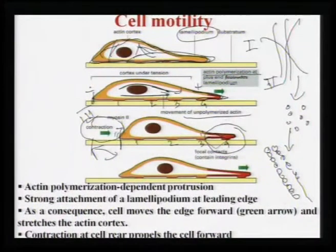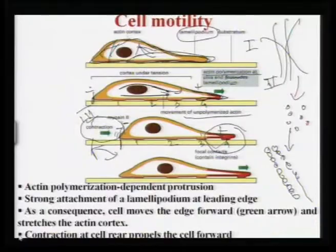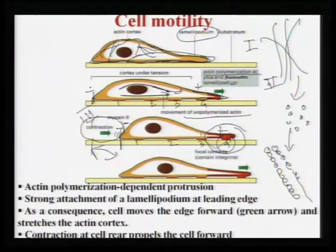Each time actin filament polymerization takes place at the plus end, more focal contacts are established. It is just like a child learning to crawl — putting one hand a little bit ahead allows the child to progress. Similarly, when a new focal contact (4 prime) is established, cells can push a little further. That is the way cells move on the substrate.